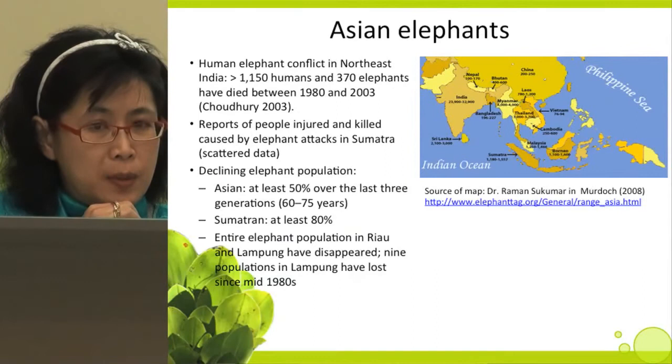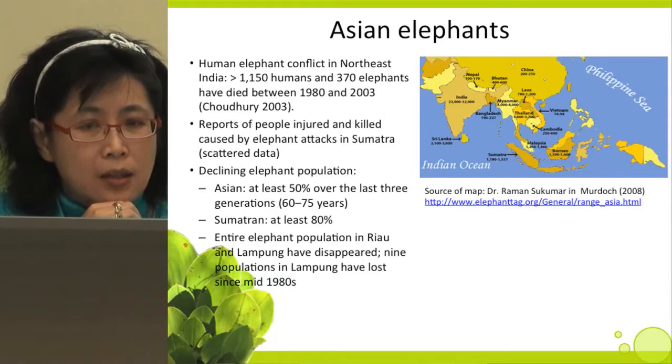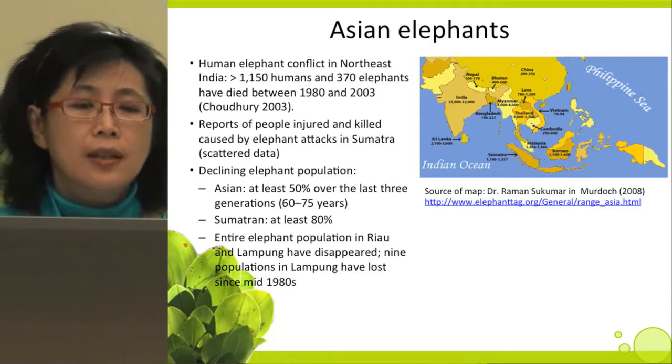This is the map of elephant distribution. Human-elephant conflict in northeast India has resulted in over 1,150 humans and 370 elephants dying between 1980 and 2003. There are also reports of people injured and killed caused by elephant attacks in Sumatra. The elephant population is also declining in Asia — at least 50% over the last three generations.